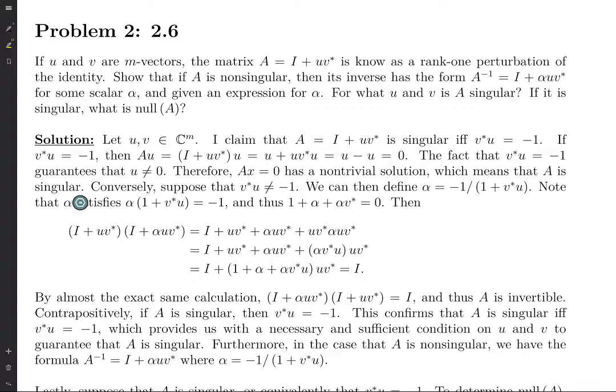So we've proven that if V star U equals negative 1, then A is singular. Conversely, we're going to prove that if V star U is not negative 1, then A is non-singular. And contrapositively, if A is singular, then V star U equals negative 1. So suppose that V star U is not negative 1.